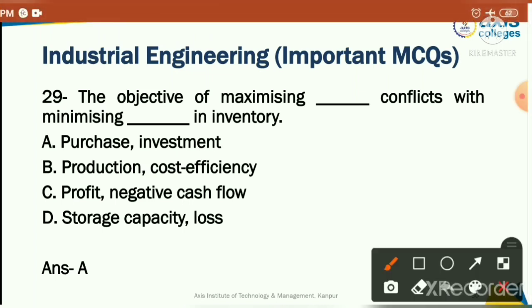The objective of maximizing what conflicts with minimizing what in inventory? The correct answer is option A: purchase versus investment — the objective of maximizing purchases conflicts with minimizing investment in inventory. To purchase more, you need to minimize investment.